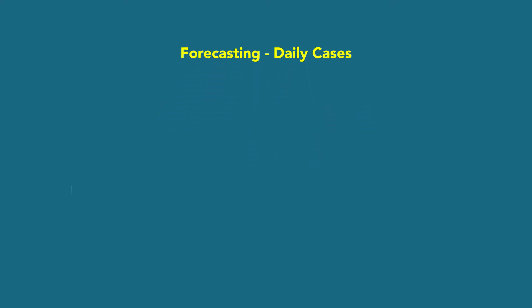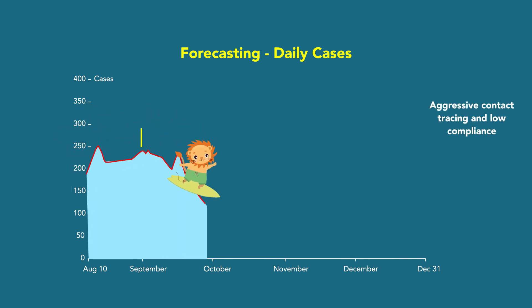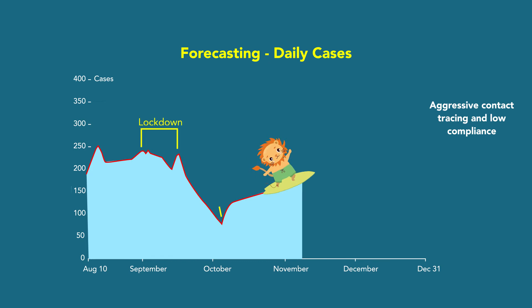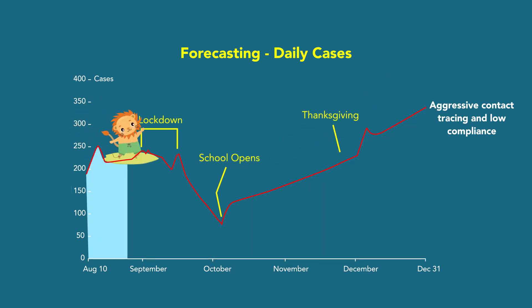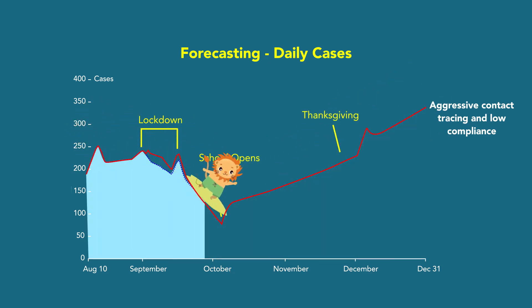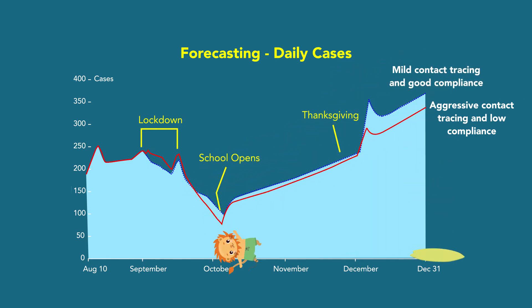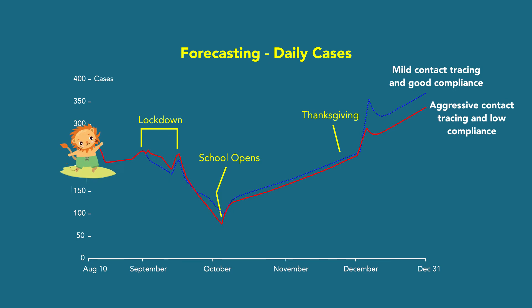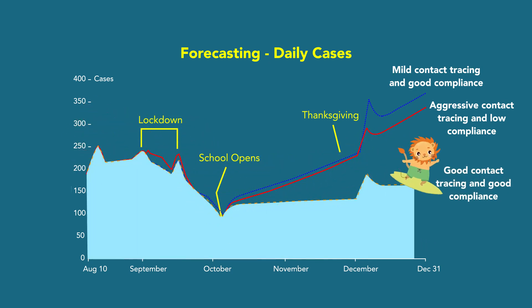Now that we understand what happened, we can forecast how it is going to project in the near future. This is the forecasting for daily cases. The red curve shows aggressive contact tracing and low compliance from the people. The blue curve, the top one, is after good compliance and mild contact tracing. The orange curve is after good contact tracing and good compliance.